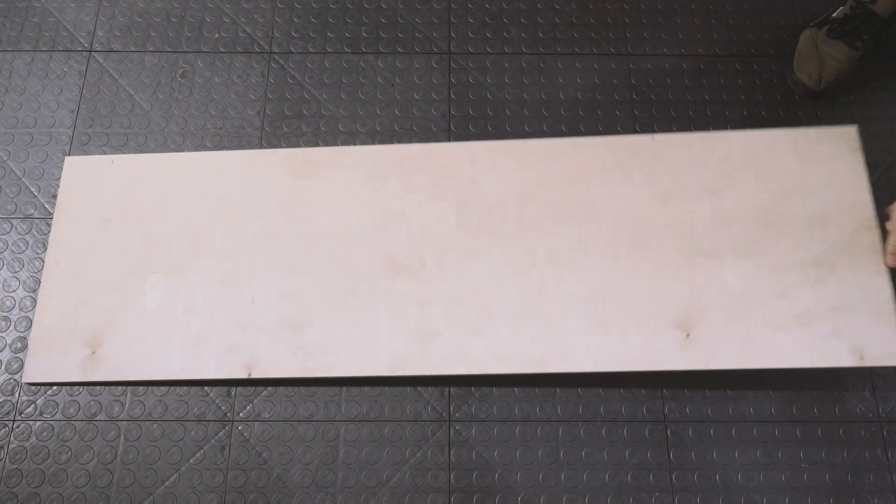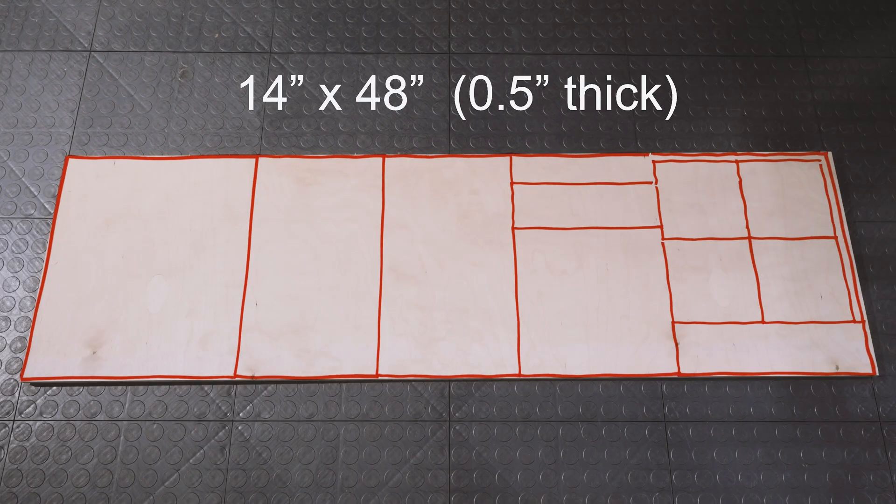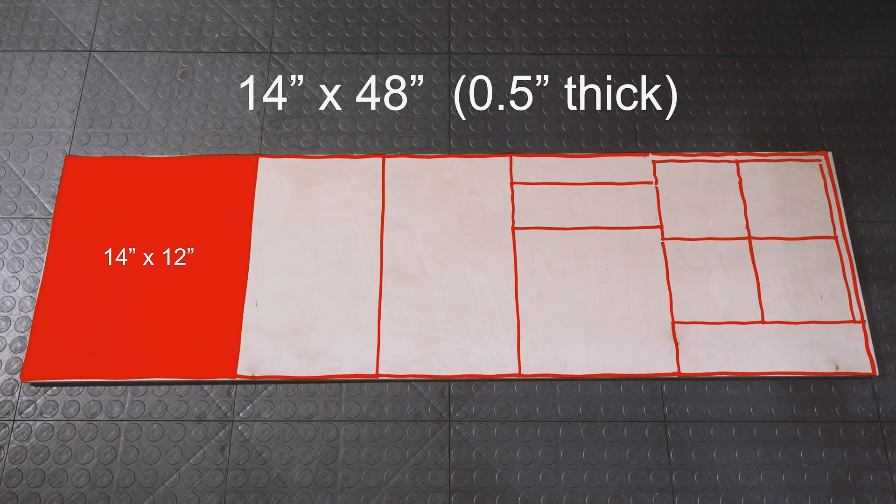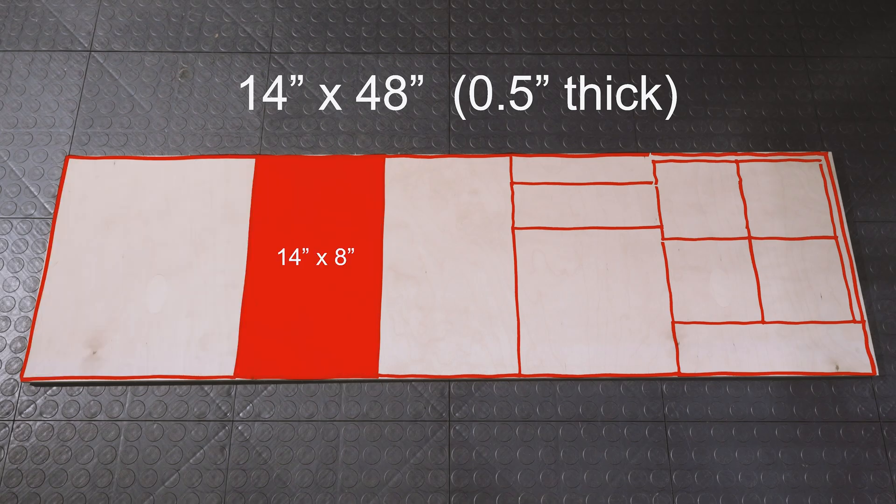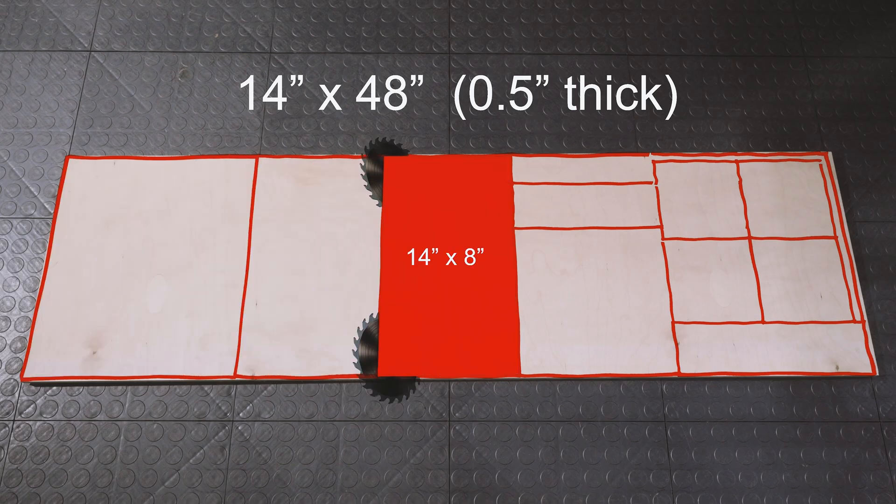We're starting out with a half inch piece of plywood, 14 inches by 48 inches. Then we'll cut 12 inches off the end for our bottom piece. After that we'll cut our two angled bed pieces with a 45 degree beveled cut in between.